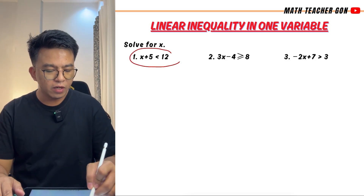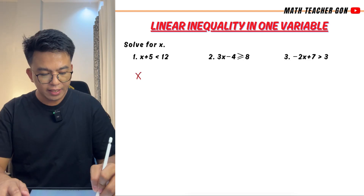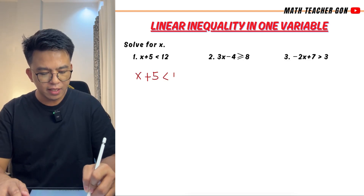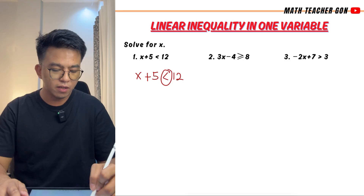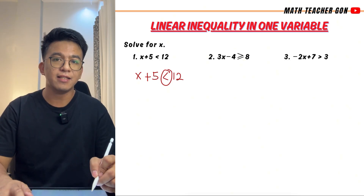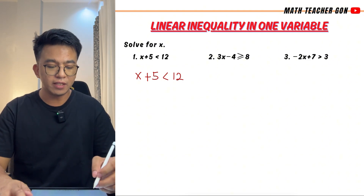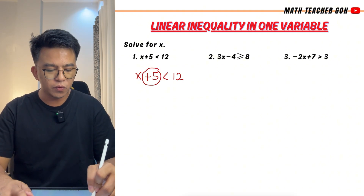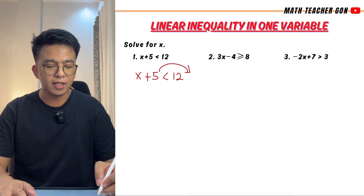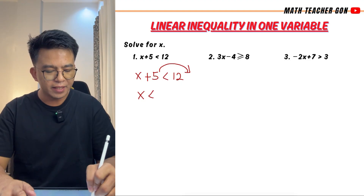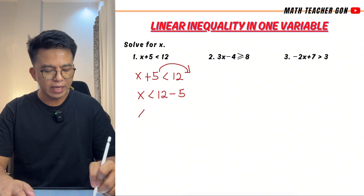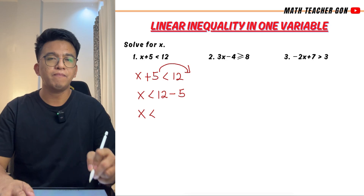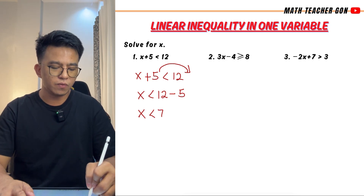Let me copy the given inequality: x plus 5 is less than 12. This symbol is read as less than. To solve this inequality, we need to transpose plus 5 to the other side of the inequality. It would become x, then copy the symbol, then from plus 5 that would be minus 5. So we have x less than 12 minus 5, which is equal to 7.